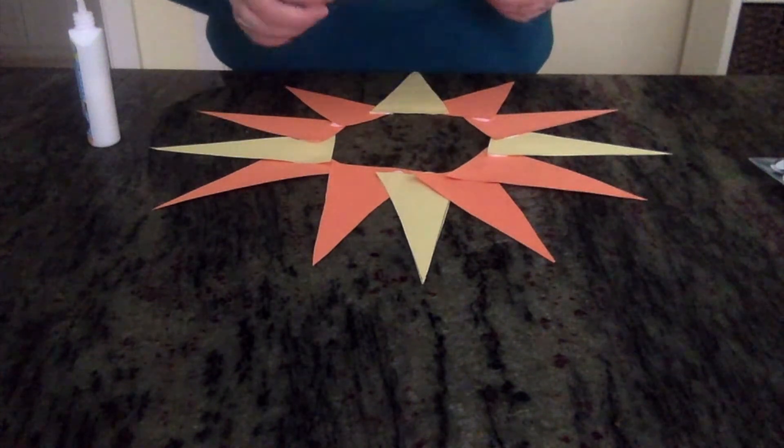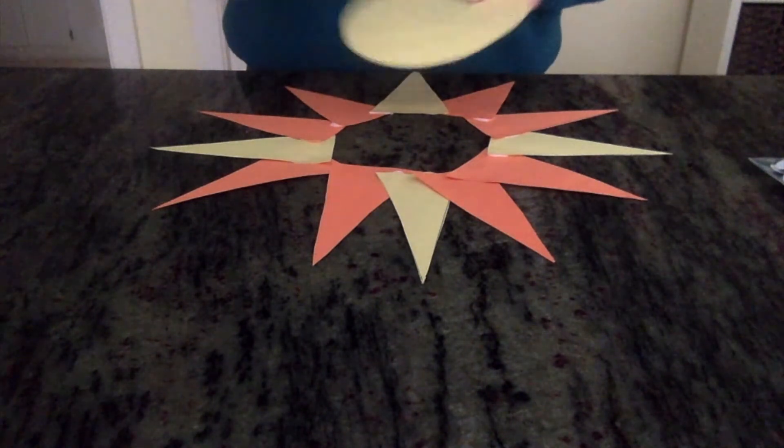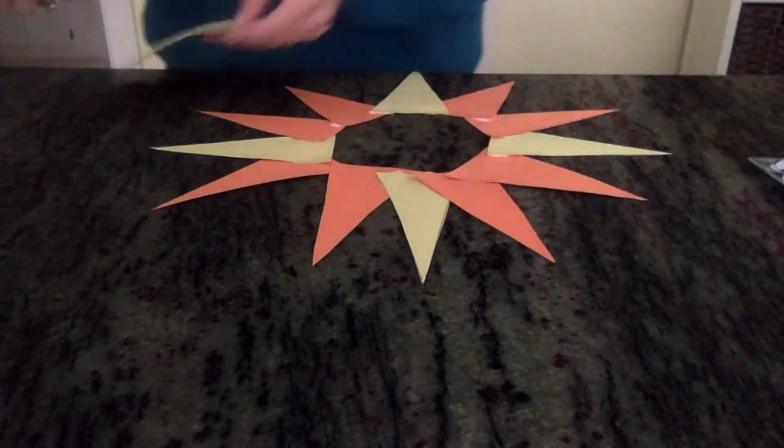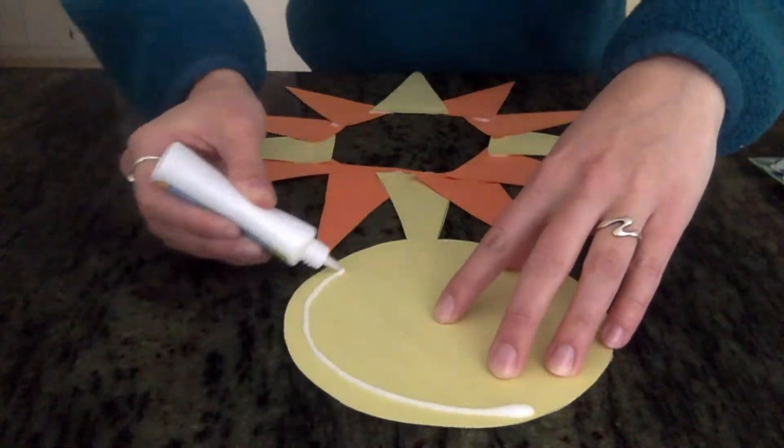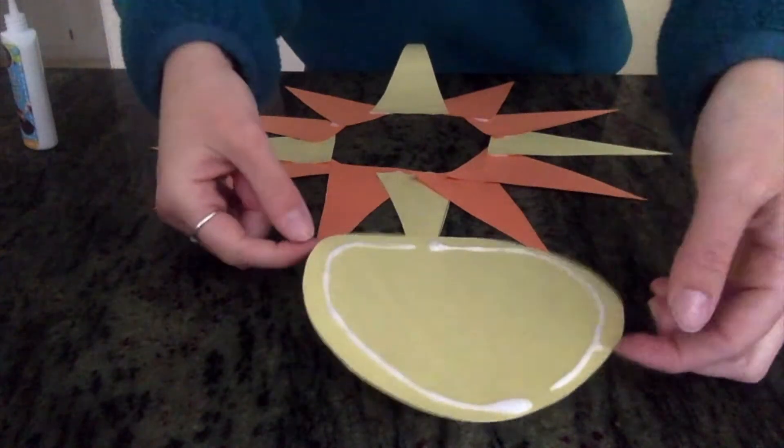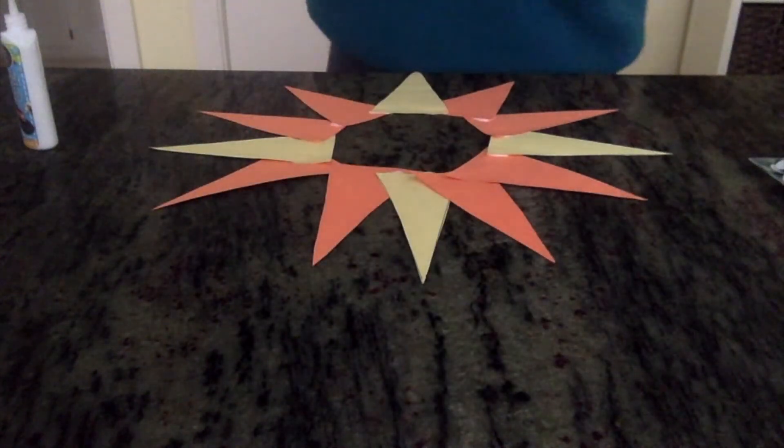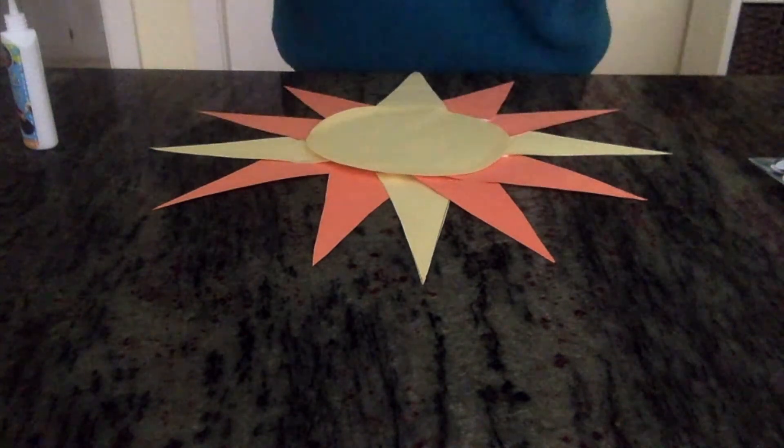So feel free to adjust when you're done to make sure those are straight. And then we're going to take our circle from earlier, and we are going to put glue just around the outside so that we can put it on top. Once you have some glue on there, just going to put it like so.